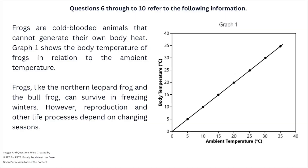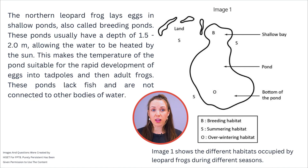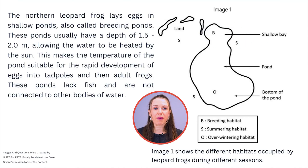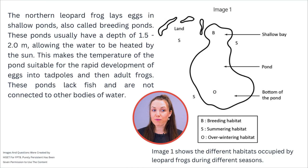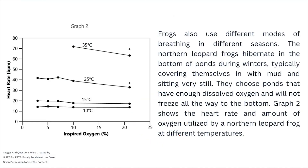Frogs are cold-blooded animals that cannot generate their own body heat. Graph 1 shows the temperature of frogs in relation to the ambient temperature. Frogs like the northern leopard frog and the bullfrog can survive in freezing winters; however, reproduction and other life processes depend on changing seasons. The northern leopard frog lays eggs in shallow breeding ponds, usually 1.5 to 2 meters deep, allowing water to be heated by the sun for rapid development of eggs into tadpoles and then adult frogs.